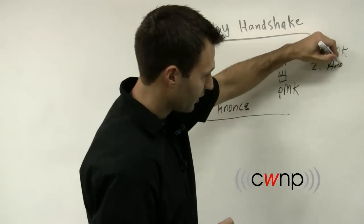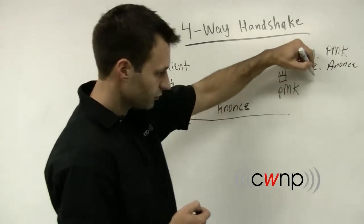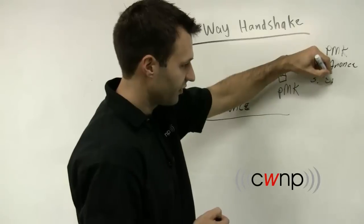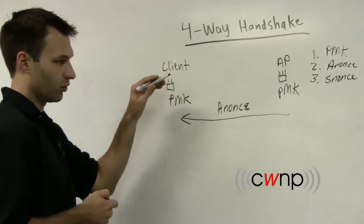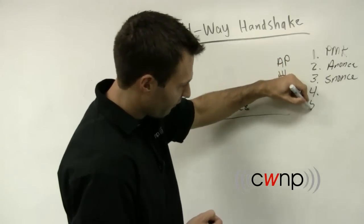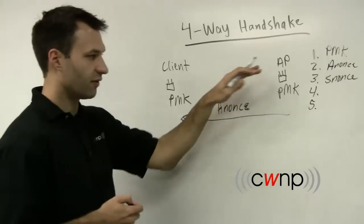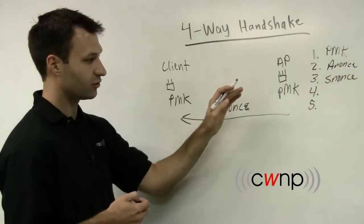The second input that's important here is the ANUNCE, the authenticator number used once. The third input is an SNUNCE, which as you might guess is the same thing as a supplicant or a client number used once. And then the fourth and the fifth things are the MAC addresses of the participating stations. So the MAC address of the client and the MAC address of the access point.